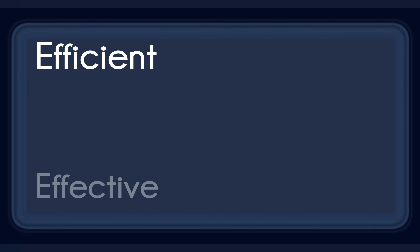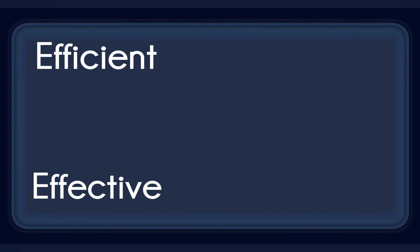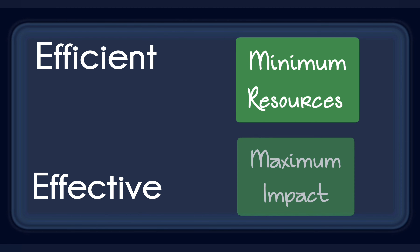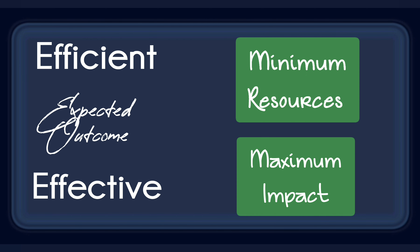Sorting the best idea among all options is the next step. Look for the most efficient and effective idea — by efficient, I mean lowest cost, lowest manpower, lowest energy, and lowest time required. By effective, I mean it should reach the expected outcome with minimum resources. While sorting, you also need to identify which ideas are within your control and which are not.